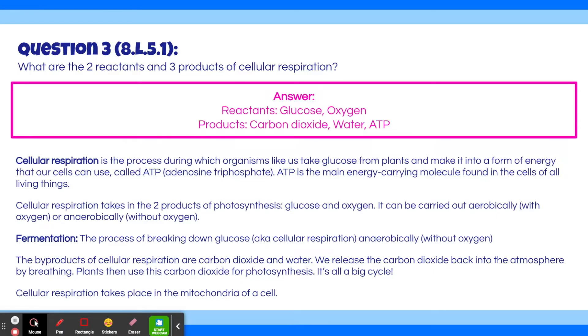The byproducts of cellular respiration are carbon dioxide and water. We release the carbon dioxide back into the atmosphere by breathing, and plants then use this carbon dioxide for photosynthesis. It's all just a big cycle. Cellular respiration takes place in the mitochondria of a cell. The big thing to notice about cellular respiration and photosynthesis is that the reactants of one are the products of the other.